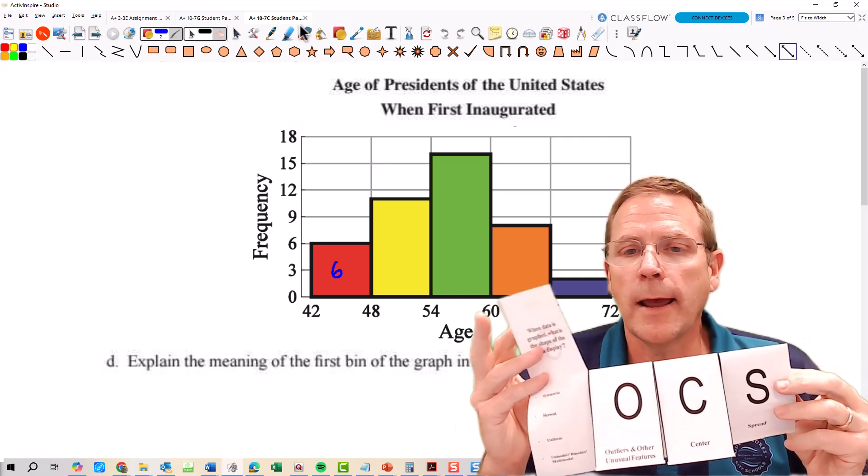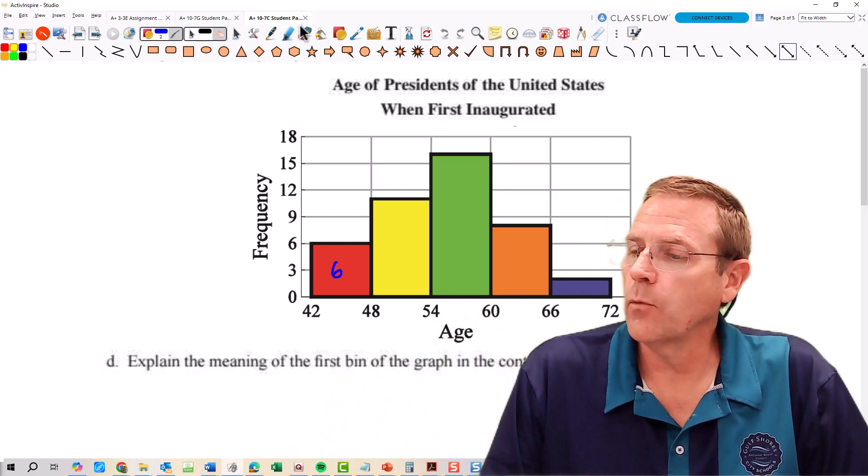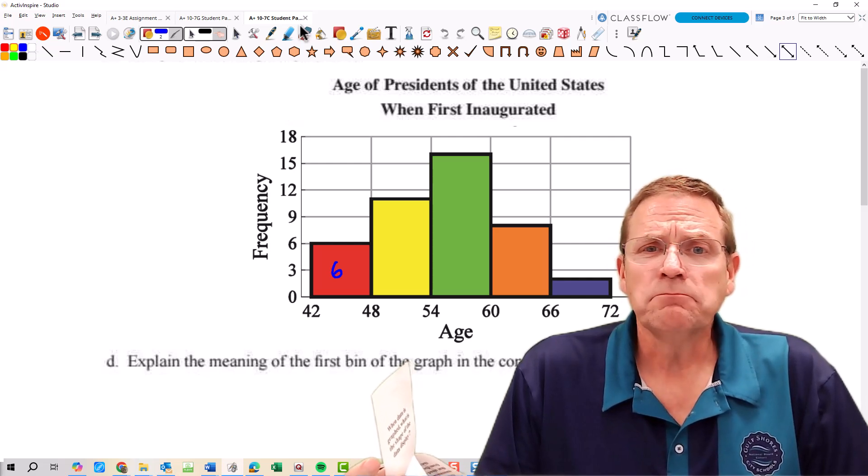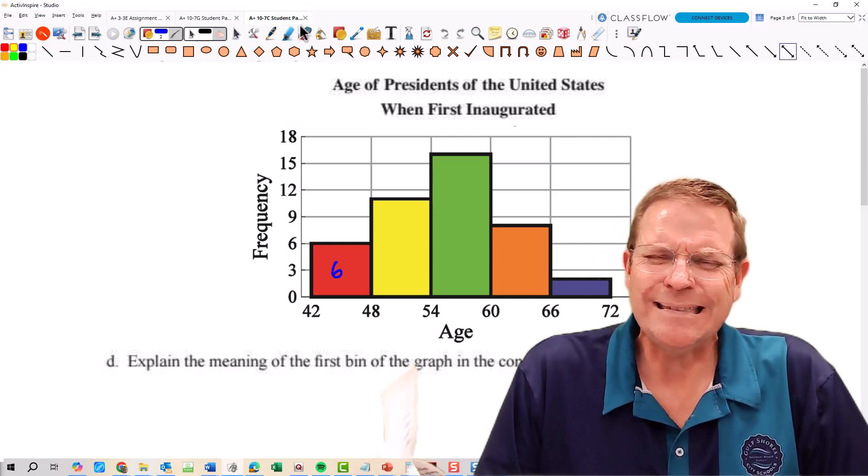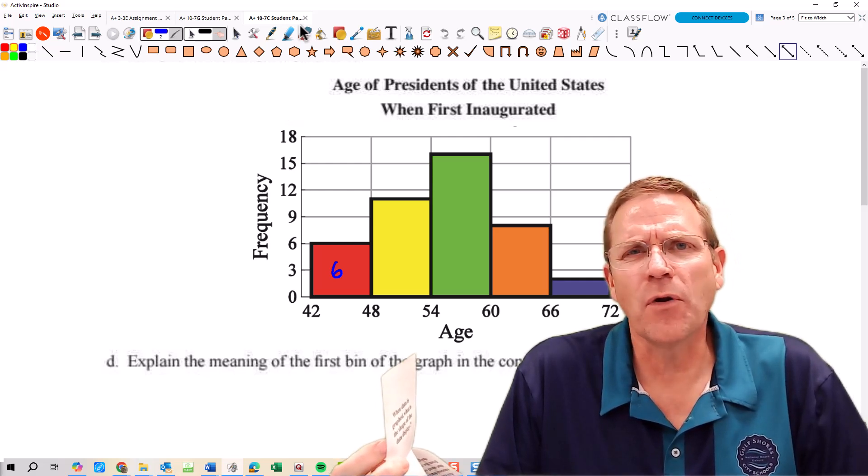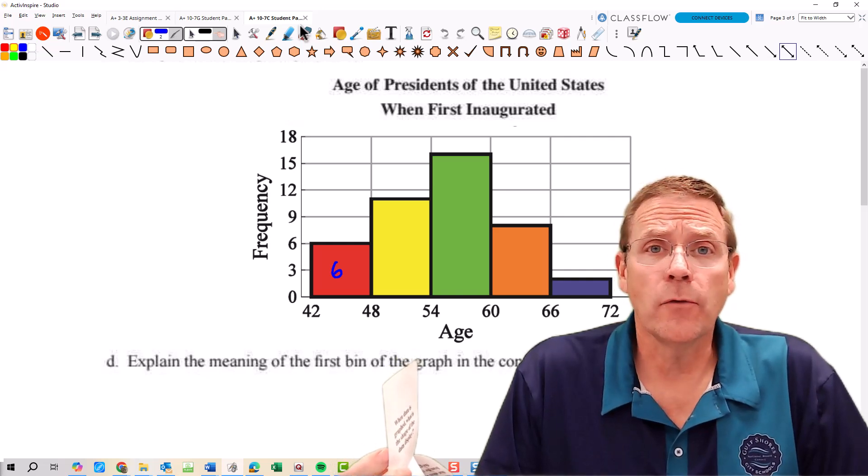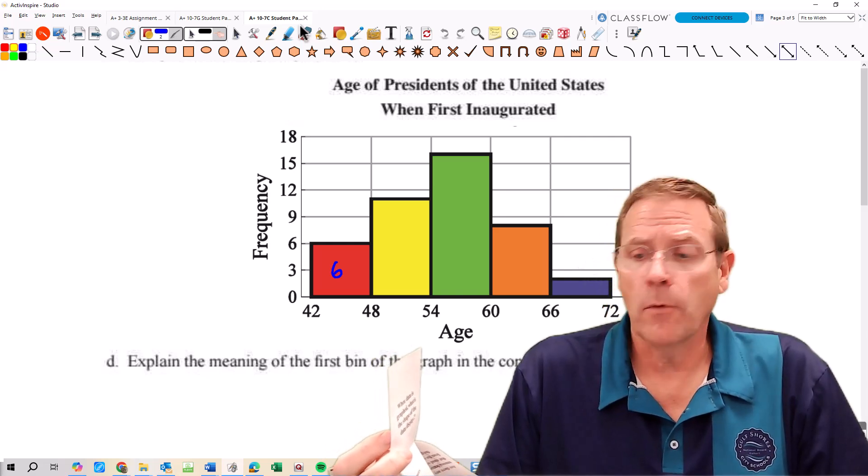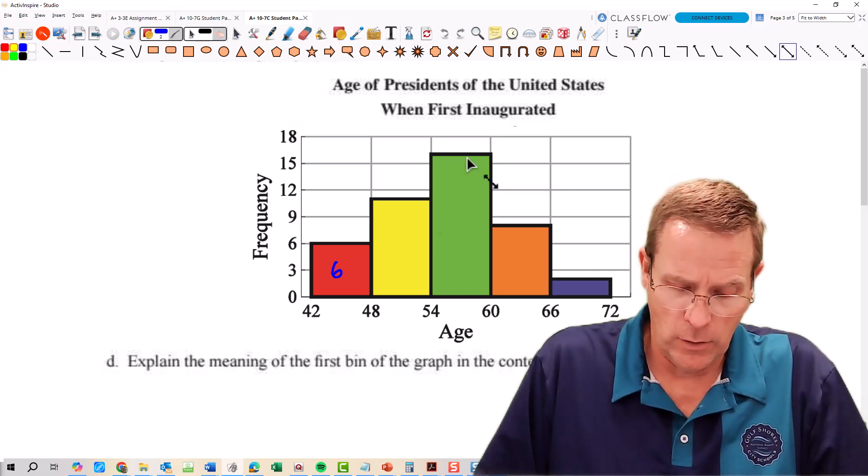We're going to start off by looking at the shape. Under the shape we ask: when data is graphed, what is the shape of the data display? Is it symmetric? More or less, yeah it really is. Is it skewed? A little bit skewed, kind of, not really. No, I wouldn't say it's skewed at all. I'm just saying it's totally symmetric. Is it uniform? It is not uniform because uniform means they're all the same exact level. And is it unimodal, bimodal, or multimodal? Well this one's unimodal because it has one peak on it.